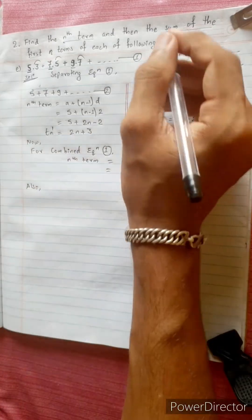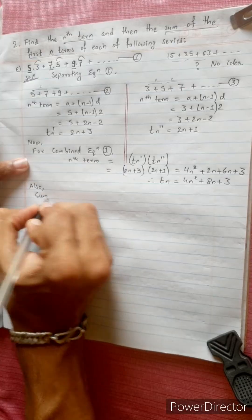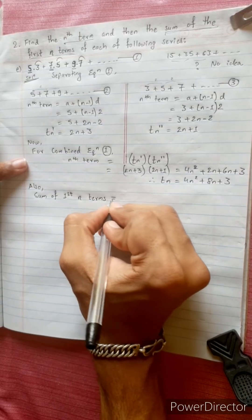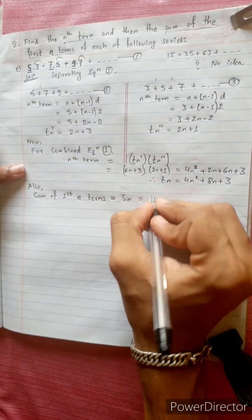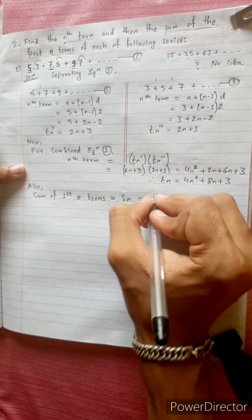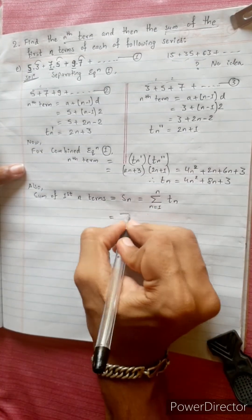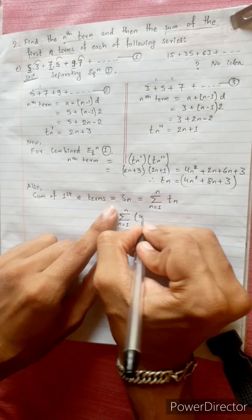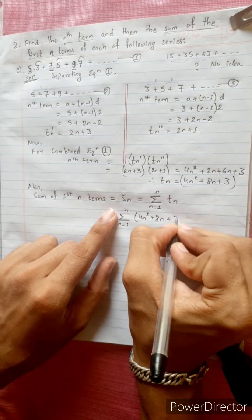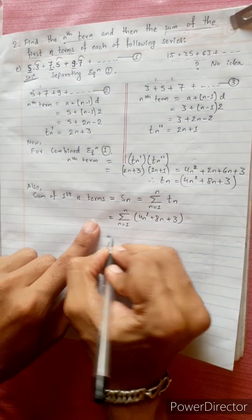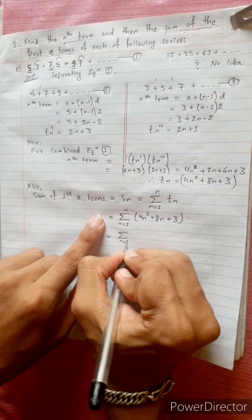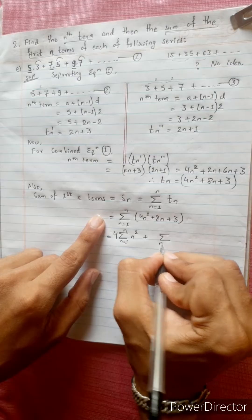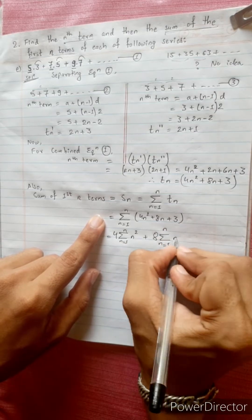Now for the sum of the first n terms, Sn equals the summation from n equals 1 to n of tn. Since tn equals 4n squared plus 8n plus 3, the sum of the first n terms equals the summation from 1 to n of 4n squared plus 8n plus 3.